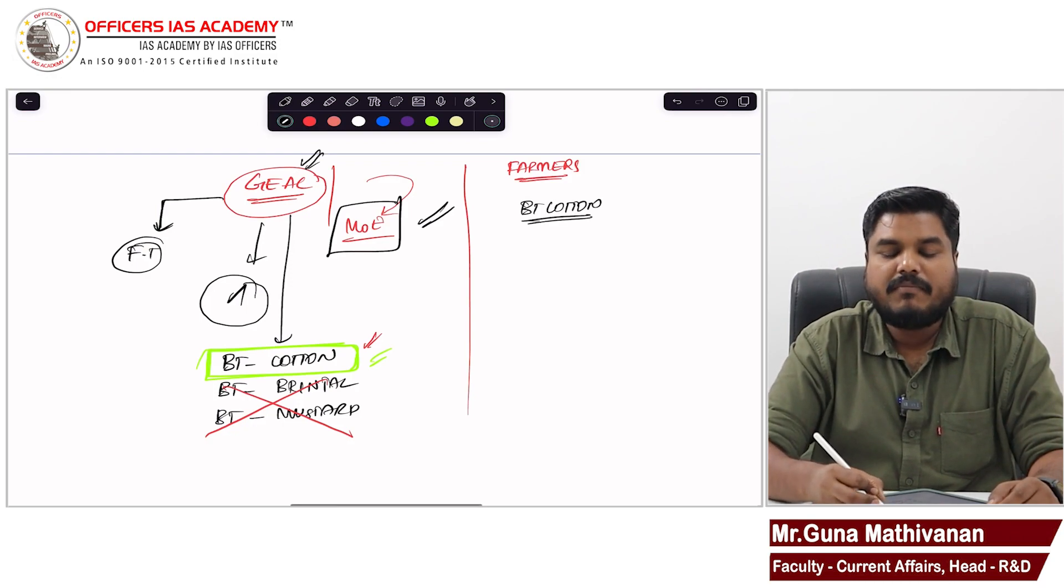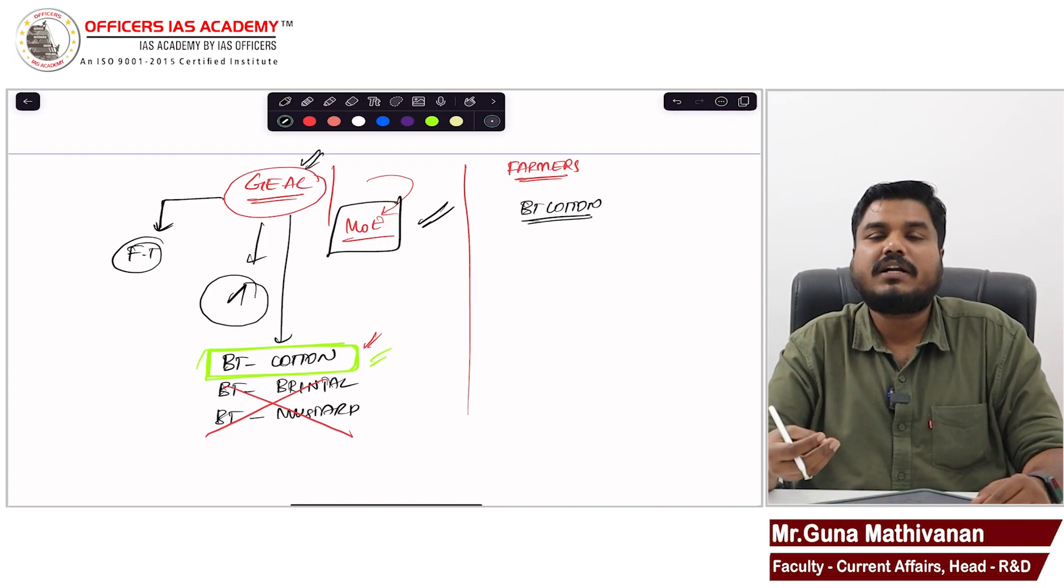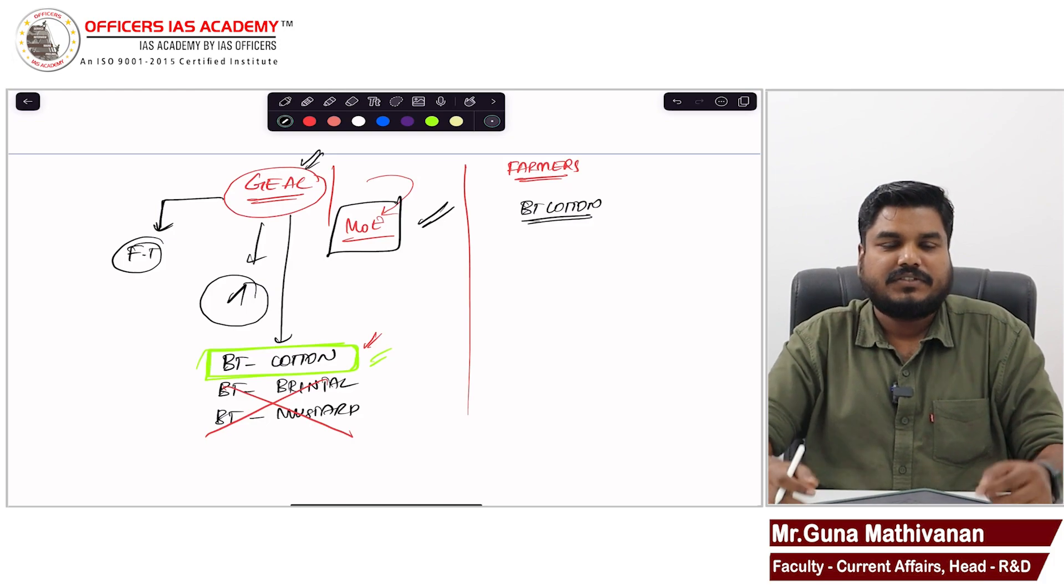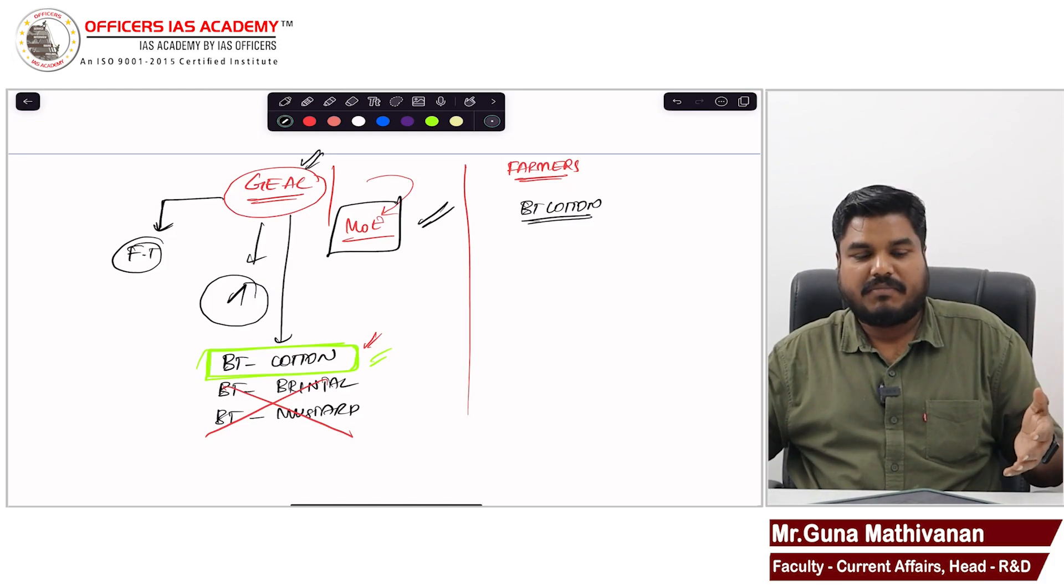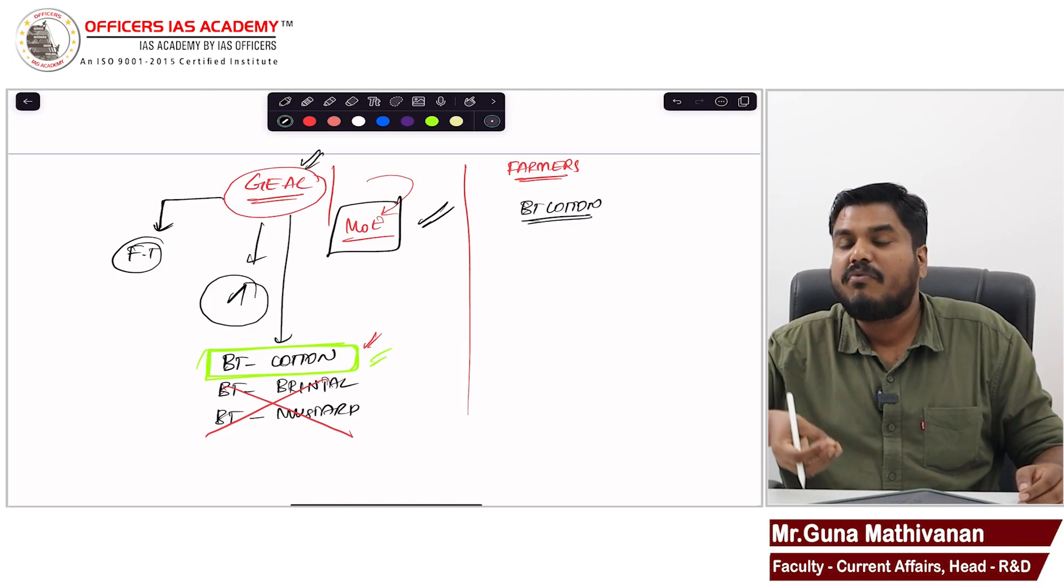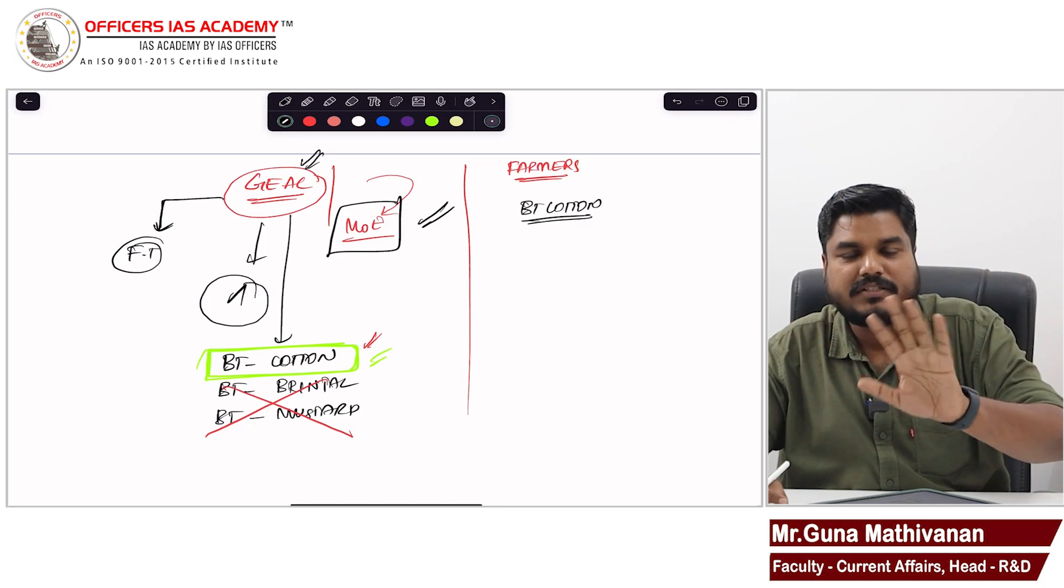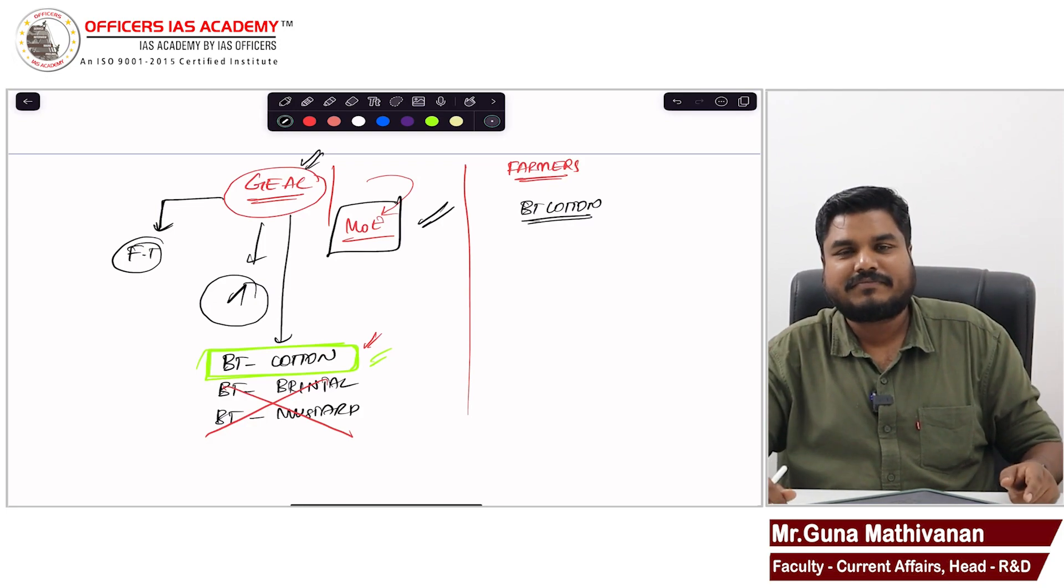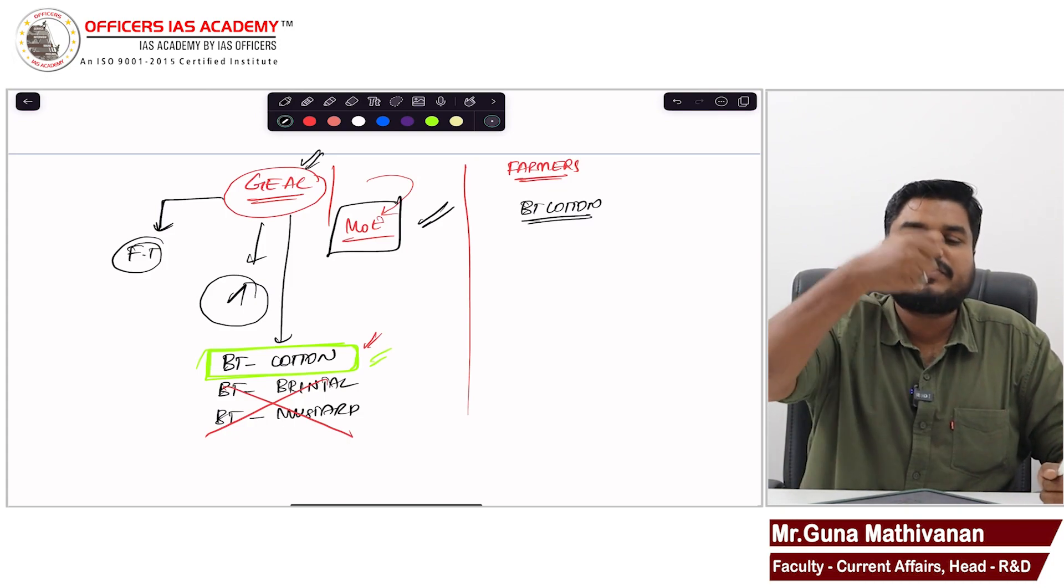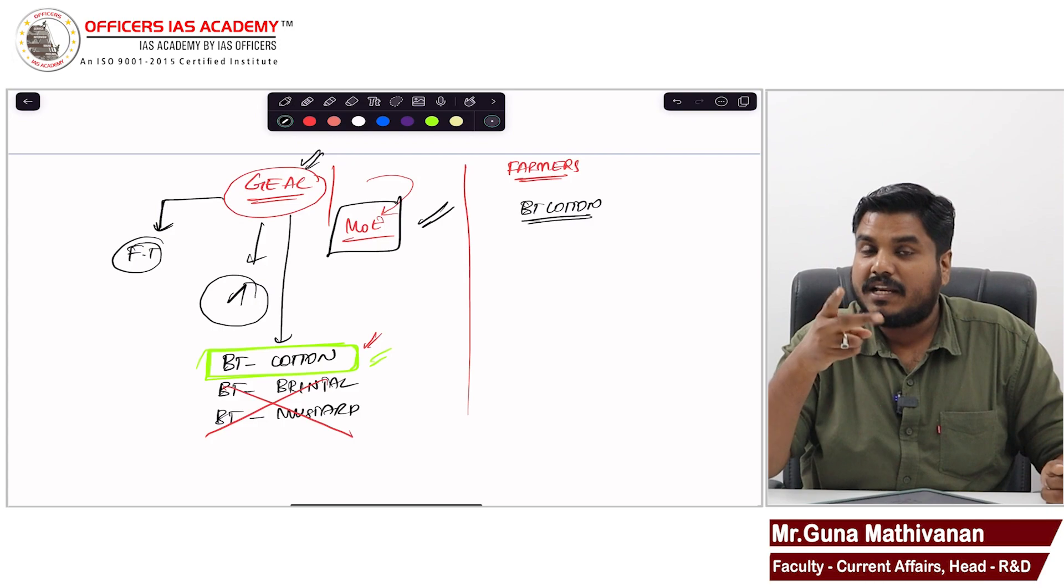What is that problem? Bt cotton is allowed in India. They are happily growing Bt cotton. But there is a problem of weed. Weed refers to unwanted plant growing alongside with cotton plant. So I have cotton plants, but in between the cotton plants, I see some unwanted small plant growth. That unwanted plant growth is not good for the cotton plant.